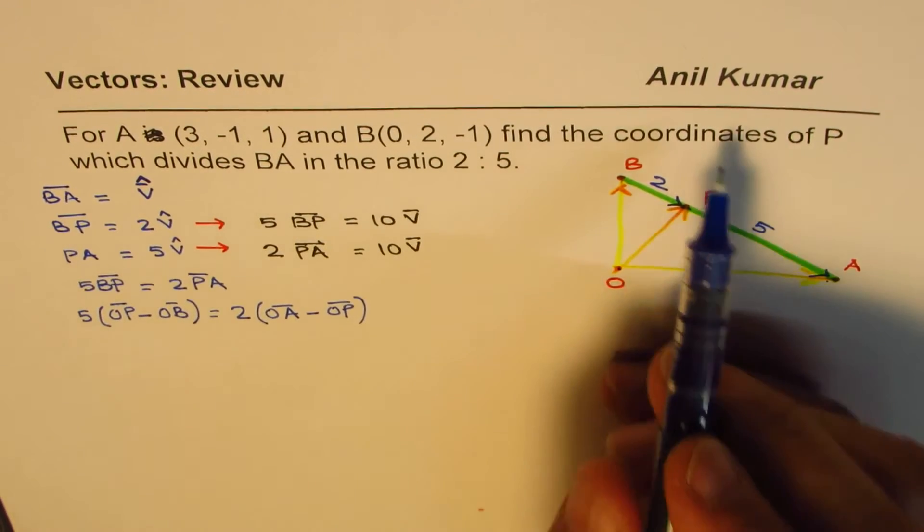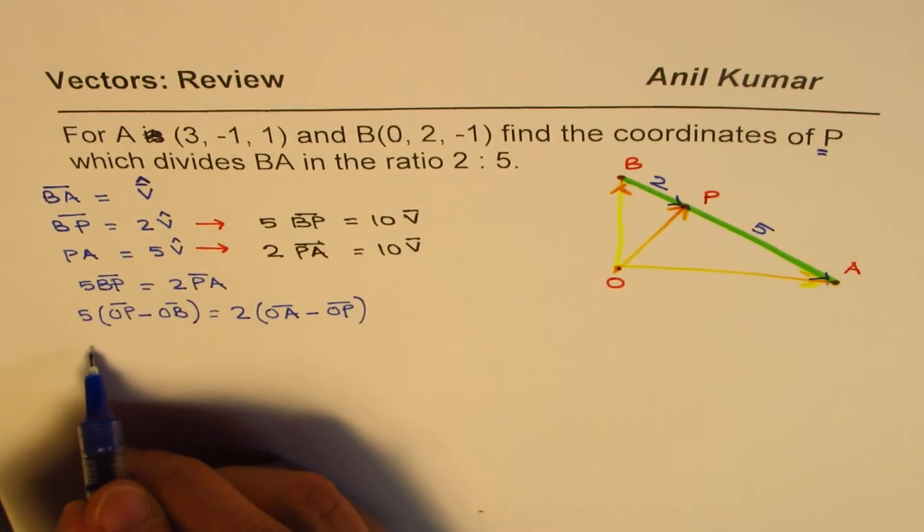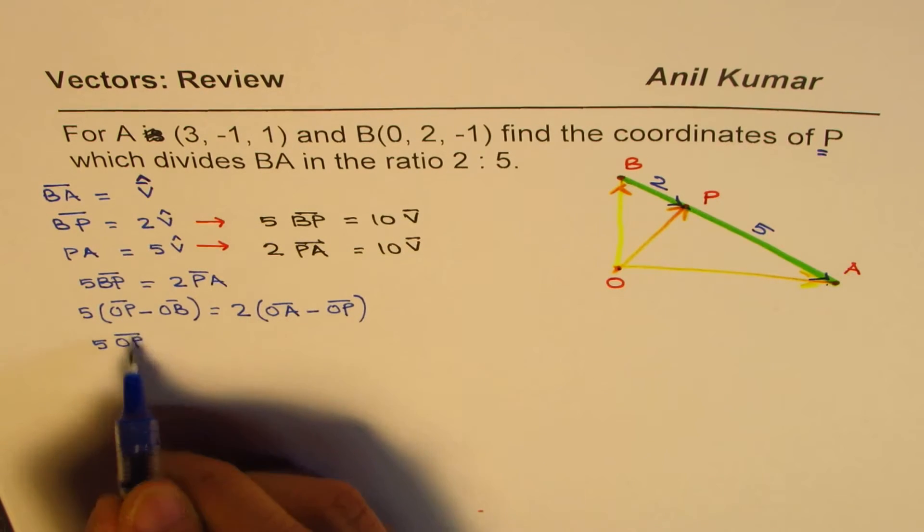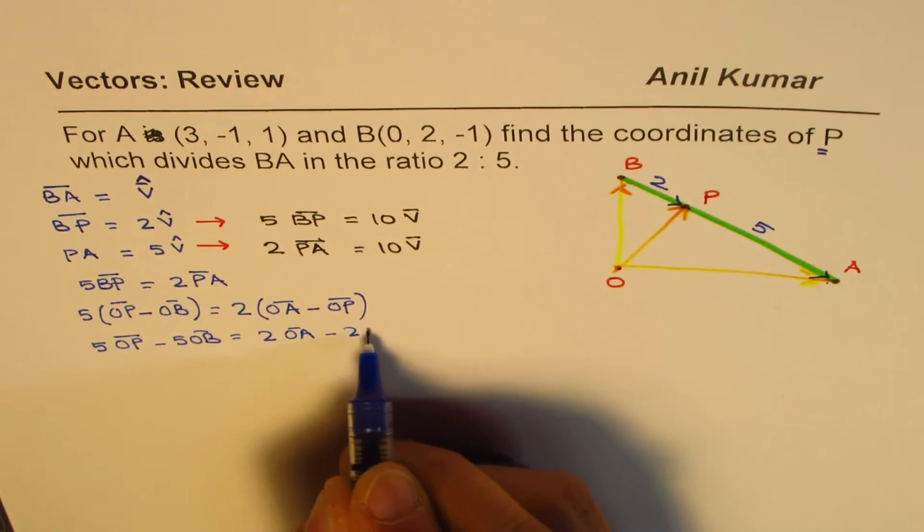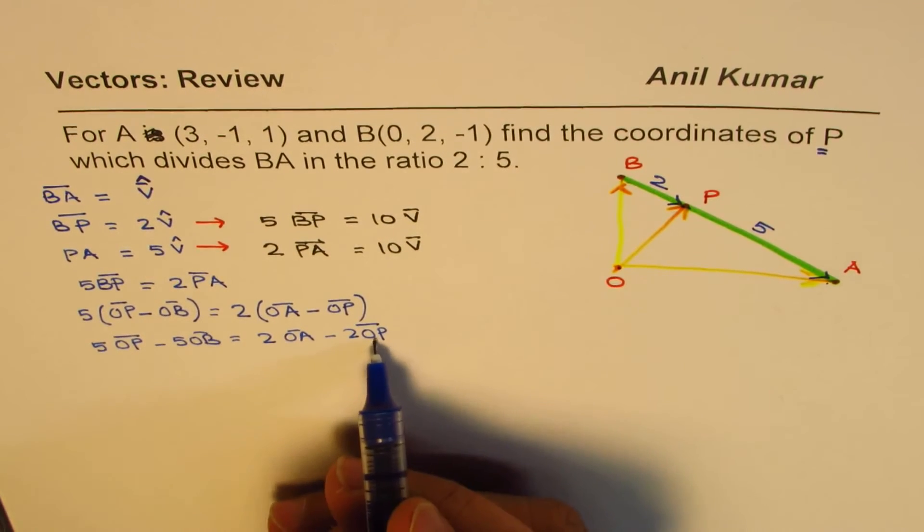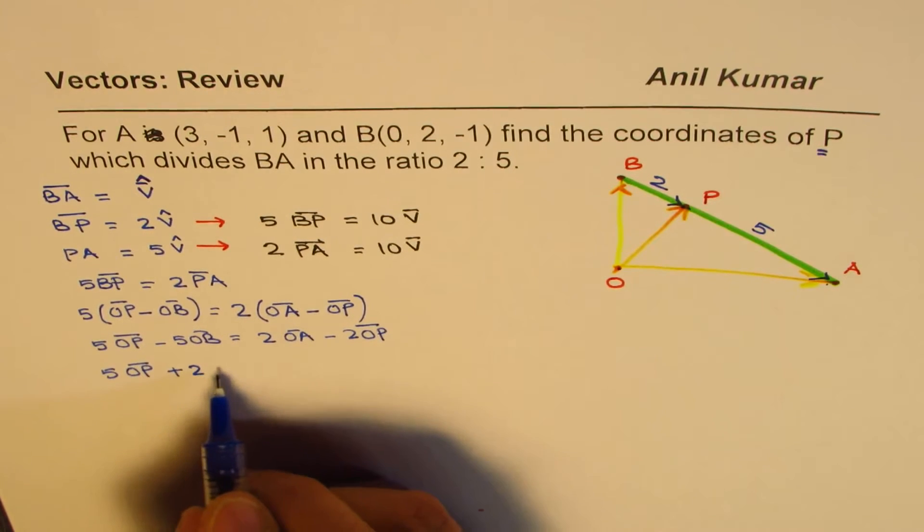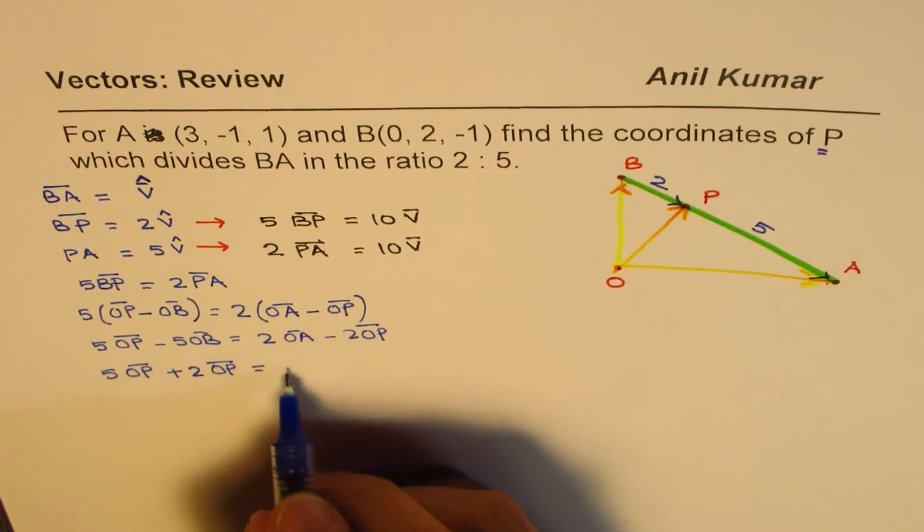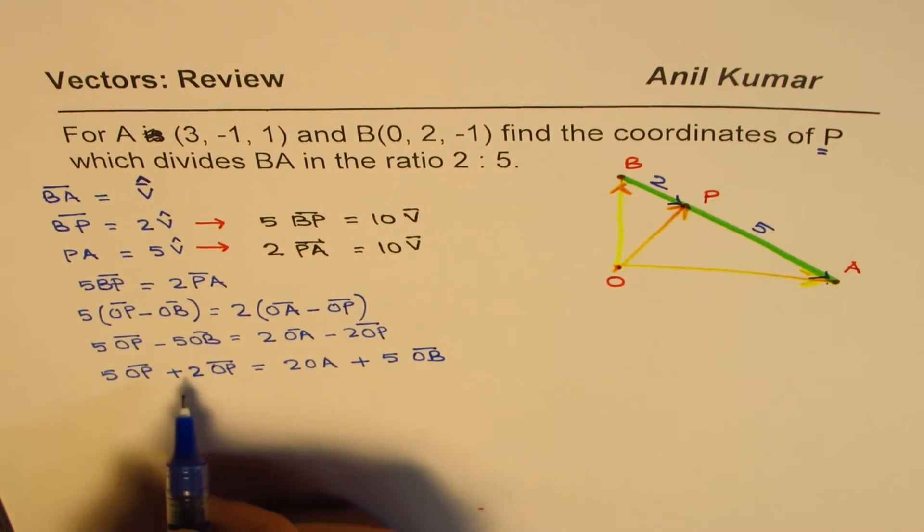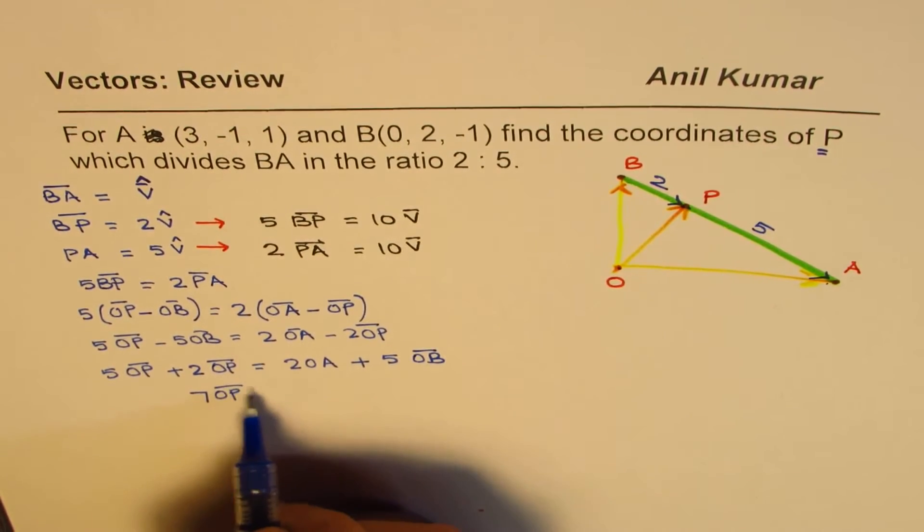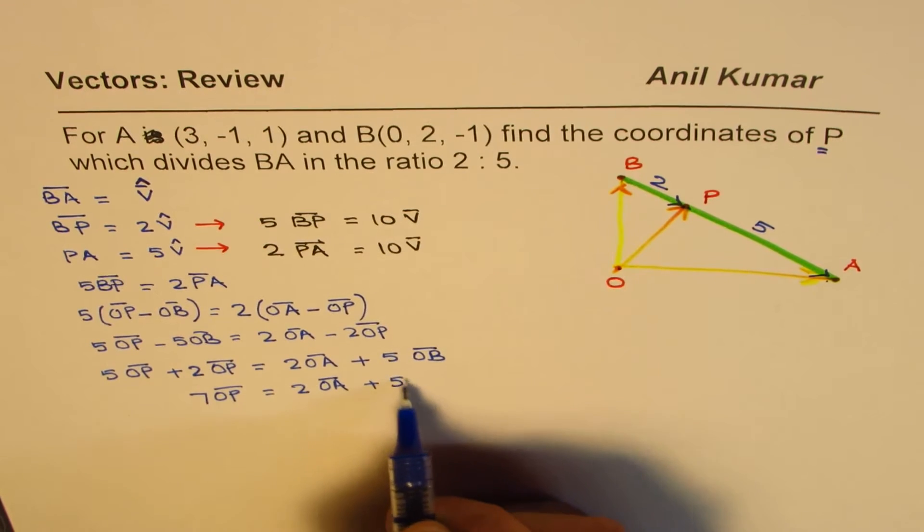What do we need to find? We need to find coordinates of P. So from here, we can isolate P. So let me open the brackets. 5 times OP minus 5 times OB equals 2 times OA minus 2 times OP. Bringing it to the right side, 5 times OP plus 2 times OP equals 2 times OA plus 5 times OB.